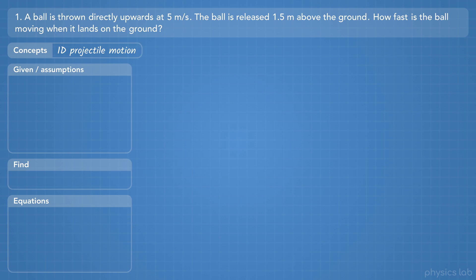A ball is thrown directly upwards at 5 meters per second. The ball is released 1.5 meters above the ground. How fast is the ball moving when it lands on the ground?